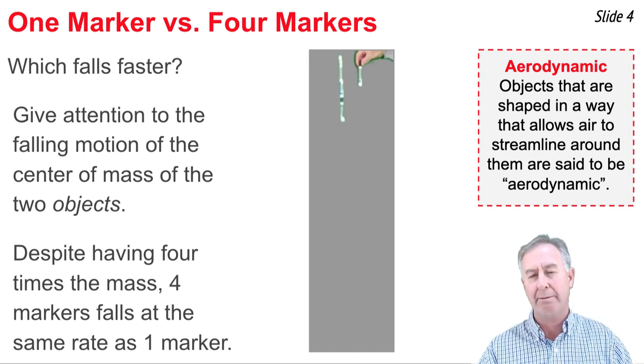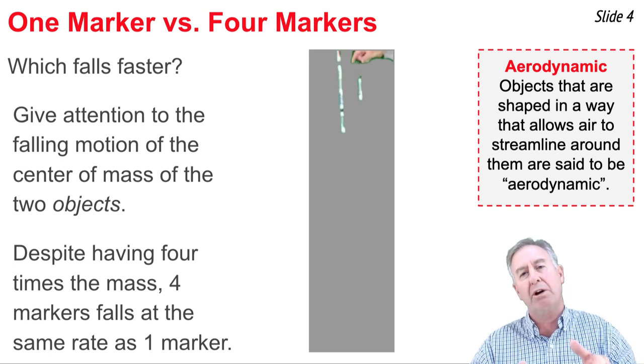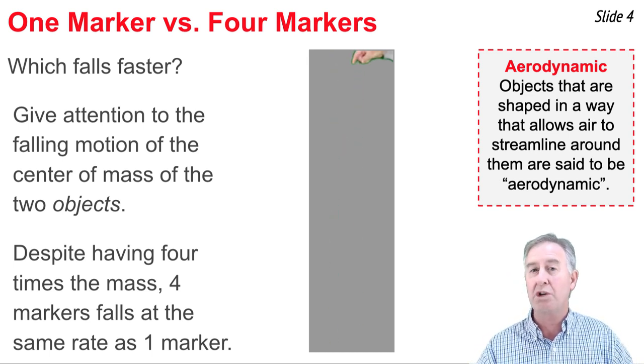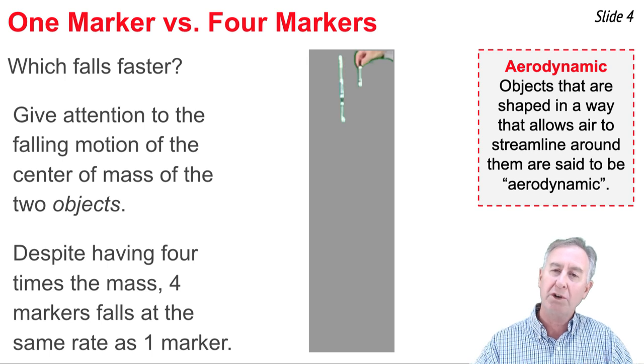This duct tape represents the center of mass of the two objects. Now we've chosen a marker because a marker tends to be aerodynamic. That is, air streamlines around the marker without having a whole lot of effect upon the motion of the marker. As such, the marker is a free-falling object.